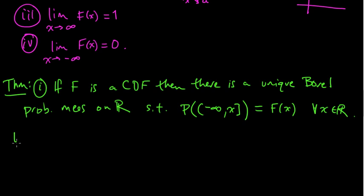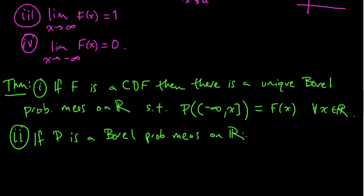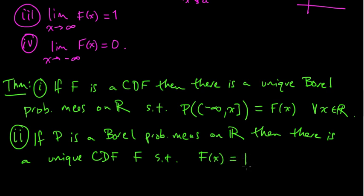And two, so that's the first part of the theorem, first statement. Second statement is a sort of converse. If P is a Borel probability measure on R, then there exists a unique CDF F satisfying this condition. There is a unique CDF F such that F of X equals P of the set from minus infinity to X, including X for all X in R.